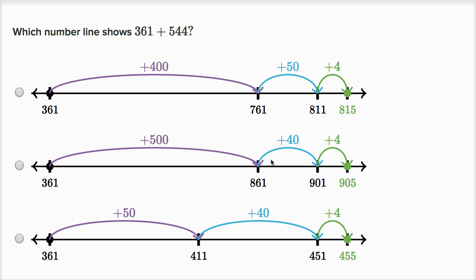Now this one adds 500, then 40, and then four. So this is adding 544 to 361. We see that it is 905.